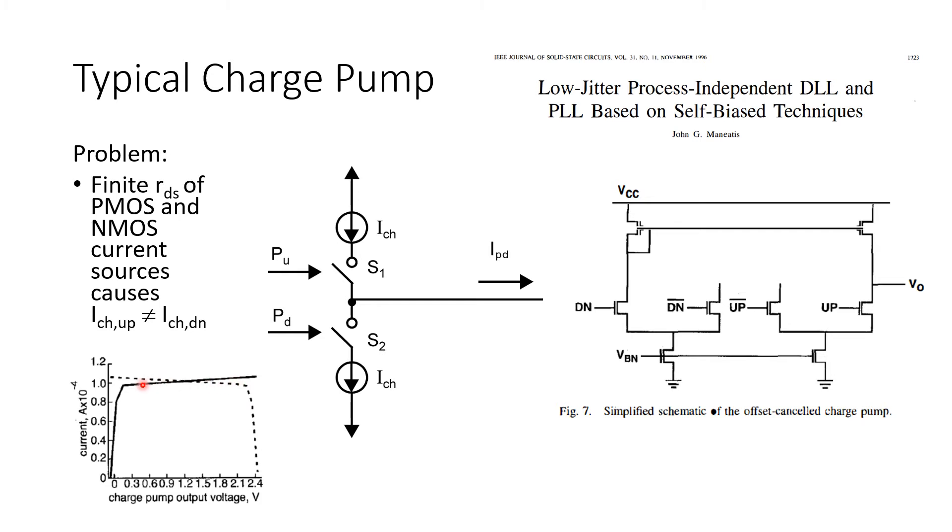So the assumption is that the output voltage is limited within a certain range between the supply voltage and ground. But even within this range, unfortunately, the pull-up and pull-down currents are not precisely matched. And again, this is a direct consequence of the finite output resistance of these current sources.